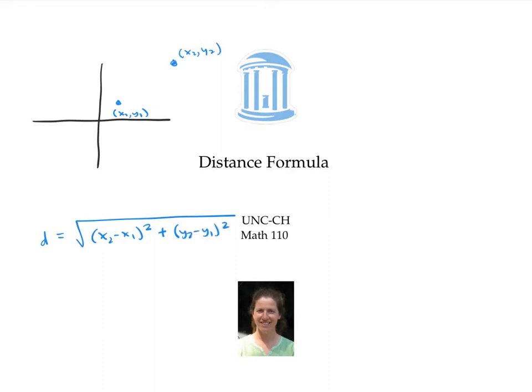This formula actually comes from the Pythagorean theorem. Let me draw a right triangle with these two points as two of its vertices. Then the length of this side is the difference between the two x coordinates. Similarly, the length of this vertical side is the difference between the two y coordinates.